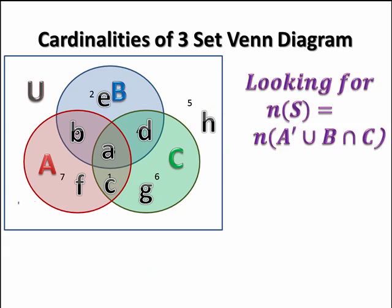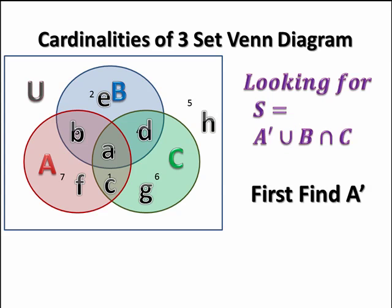Now we're going to think about what we're looking for. We're looking for the number of elements in the set S, or in other words, the number of elements in A complement union B intersect C. So first we need to figure out what is A complement.